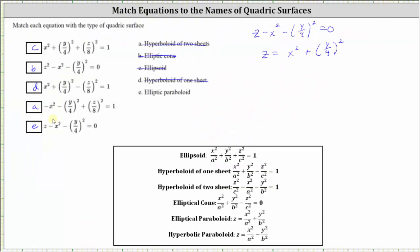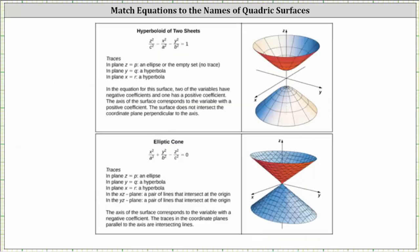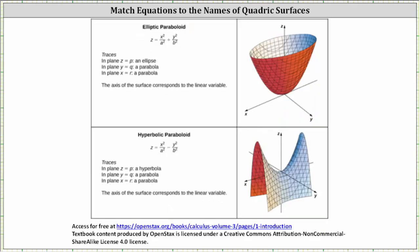I hope you found this helpful. Before we go, I want to share some more detailed notes on the quadratic surfaces from the OpenStax Calc-3 textbook: the ellipsoid, hyperboloid of one sheet, hyperboloid of two sheets, elliptic cone, elliptic paraboloid, and finally the hyperbolic paraboloid. You can find these notes in the textbook linked below.